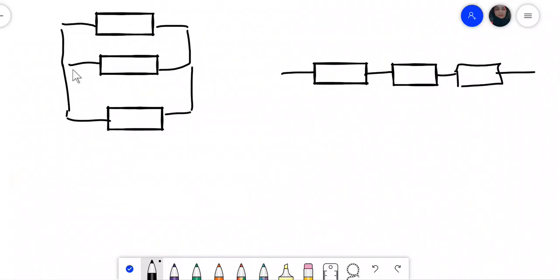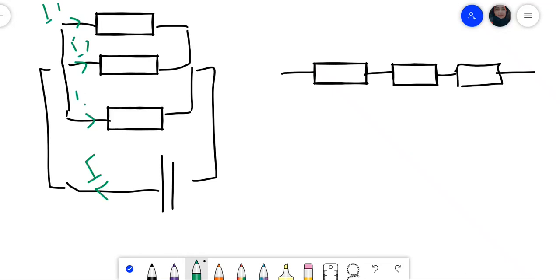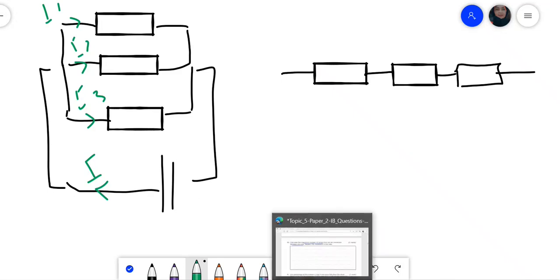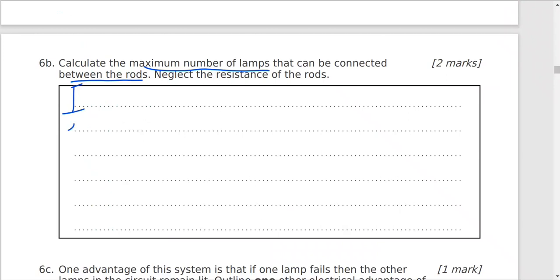The current for each lamp will be split. So if you have connection in parallel, the current, the total current that comes from the battery if it's I, it will split to different currents I1, I2, I3. So the current in each lamp, if they have equal resistance, will equal the total current divided by the number. The total current, the big current, divided by how many lamps. If I have three, so it will be the total current divided by three lamps.